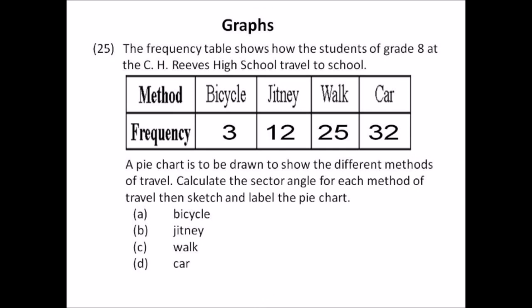Number twenty-five: graphs. A frequency table shows how Grade 8 students travel to school — bicycle, jitney, walking — with values 3, 12, 25, 32. A pie chart is to be drawn. Calculate the sector angle for each method of travel and sketch and label the pie chart. Change each number to degrees — all the angles must add up to 360 degrees. Use your protractor to draw the sectors from the center, then label them.